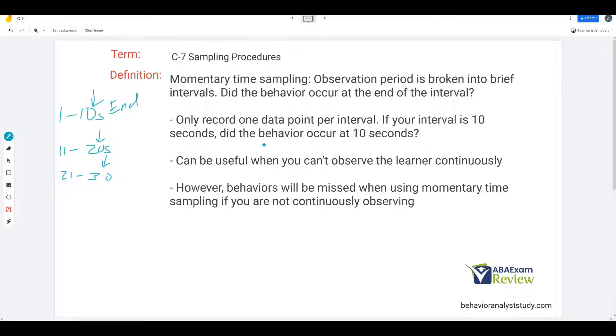If your interval is 10 seconds, did the behavior occur at 10 seconds? It can be useful when you can't observe the learner continuously. If you're short on time or resources, let's say you have a 20-second interval, you only have to record at the end of the 20 seconds. So you can be doing other things and you only need to look up at the end of the interval. Planned activity check, same idea, except we're looking in a more group setting. However, behaviors will be missed when using momentary time sampling if you're not continuously observing. As always, there are downsides to discontinuous measurements. We only use discontinuous measurement after careful assessment, careful analysis, and it has its merit. We have to accept the fact that we might miss some things. It might not be as reliable, accurate, or valid.